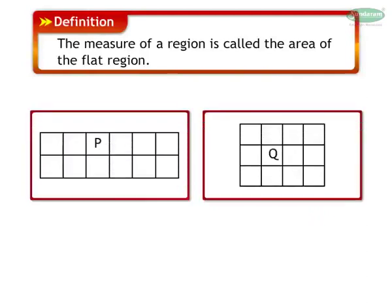To find out the area of a rectangular region, let us divide both figures into small squares. We can see both are having the same area as both occupy 12 small squares.